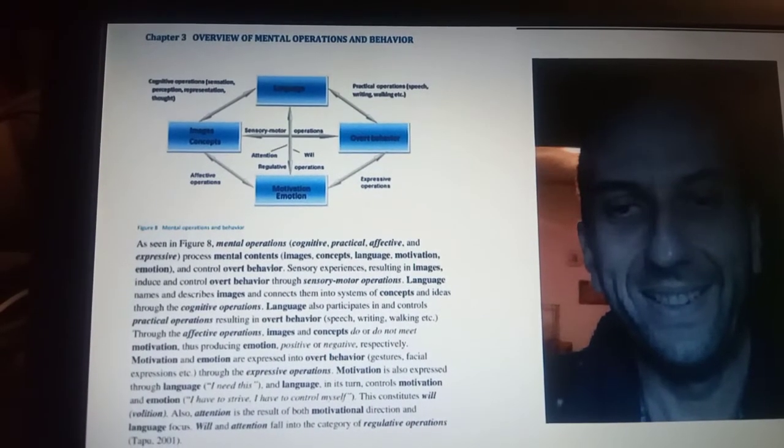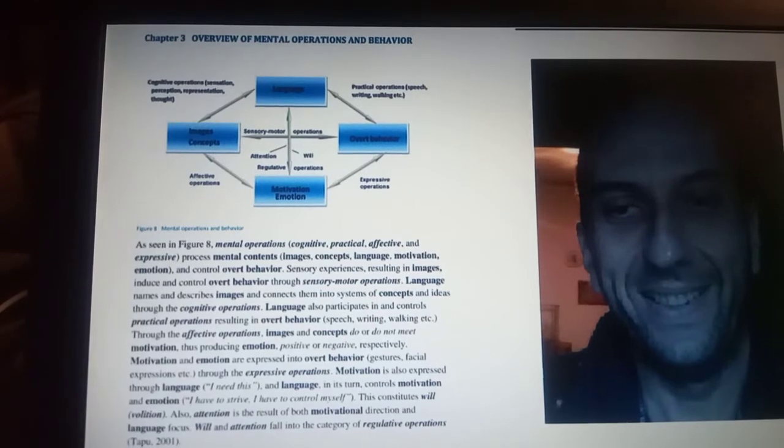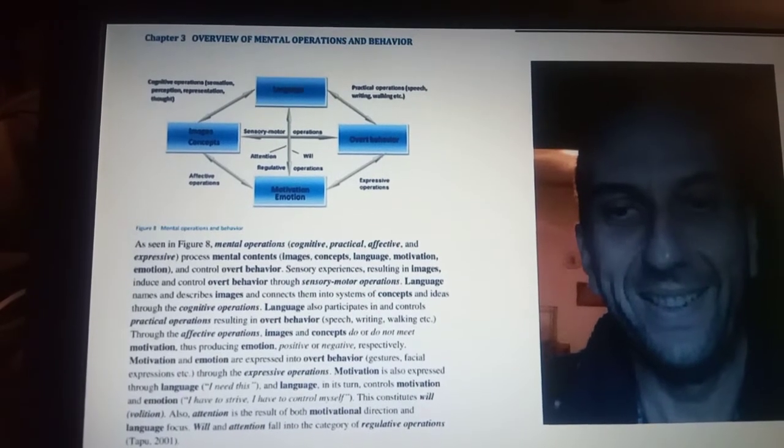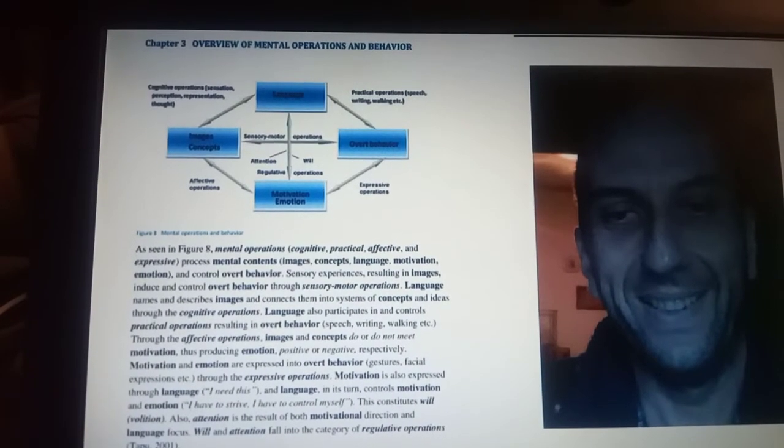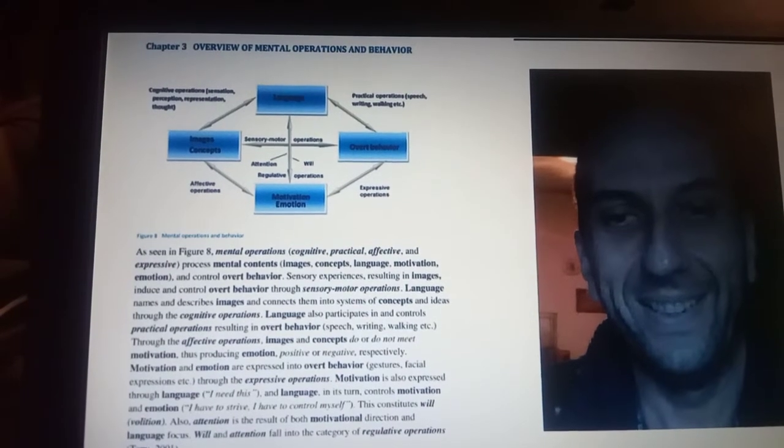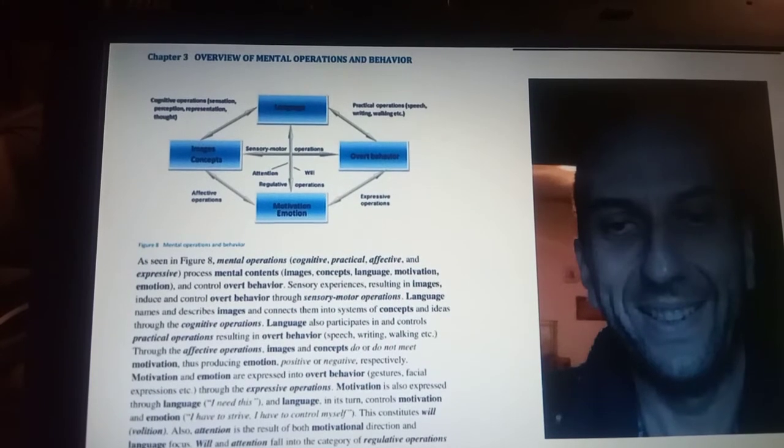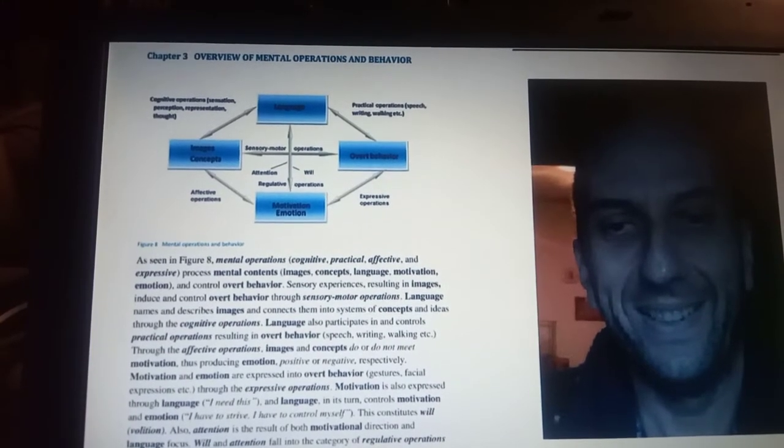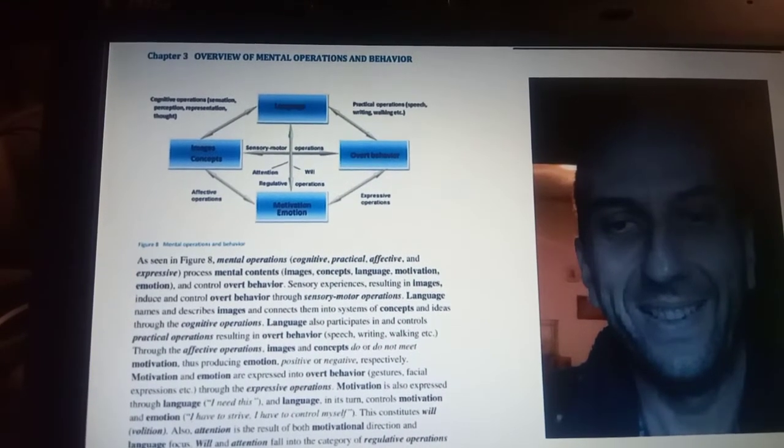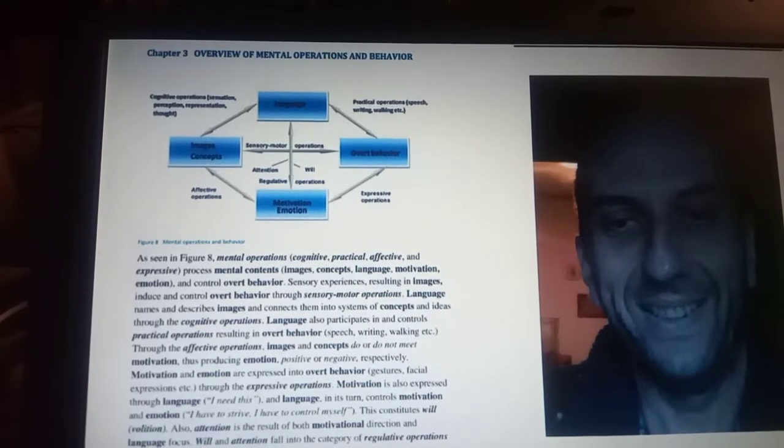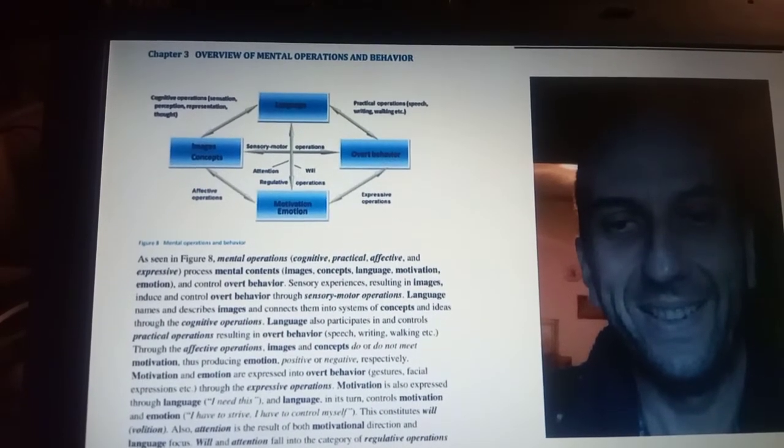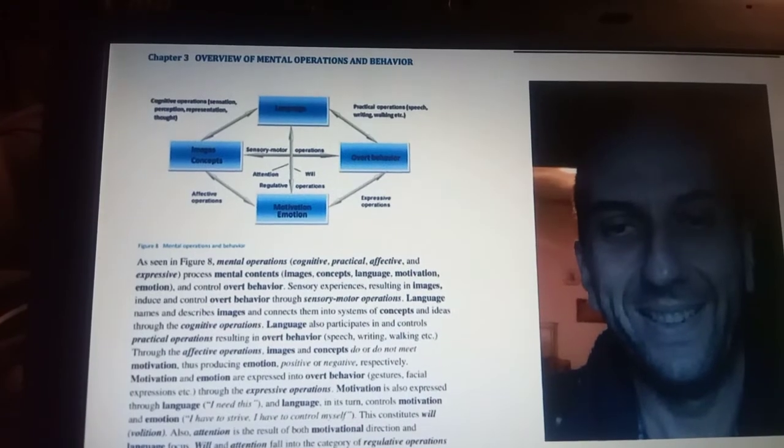There are four main types of mental operations that process mental contents which can be images and concepts, language, and motivation and emotion, and control overt behavior. Sensory experiences resulting in images induce and control overt behavior through sensory motor operations.